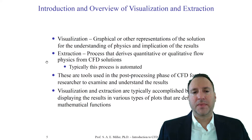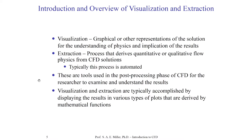Visualization and extraction are typically accomplished by displaying results in various types of plots. These are derived by mathematical functions — for example, something like vorticity. Typically, codes do not directly output vorticity. In contemporary codes they can, but you're using more memory. It's much better to calculate things like vorticity in the post-processing phase, traditionally for reasons of very limiting computer memory.